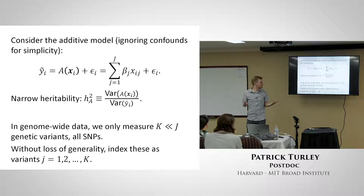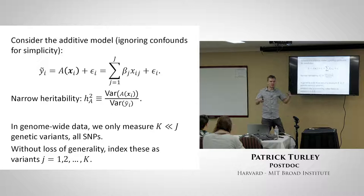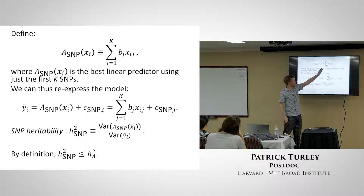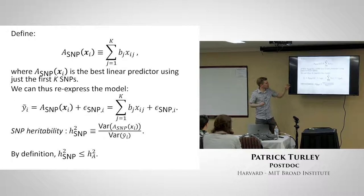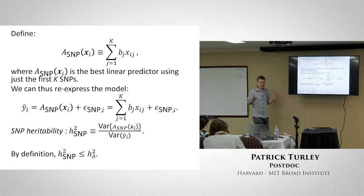One tricky thing is that when we have genome-wide data, we don't measure every variant. We only have some subset K of them, which is a lot less than the full set J, because we don't have super rare things and we usually don't measure structural variants. So I'll introduce the concept of the additive SNP factor — the best linear predictor of the observed SNPs for the phenotype. I'm using little b to correspond to the weights assigned to each SNP in that subset.